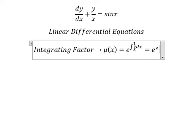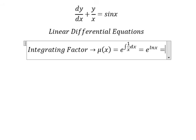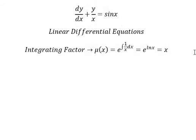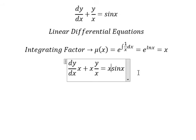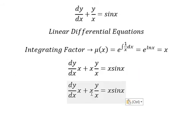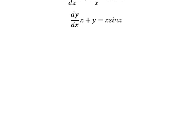The integral of 1 over s gives us ln(s), and this one we have s. So we multiply both sides by s. Now we have Y, and we need to take the integral of both sides.